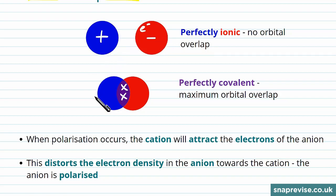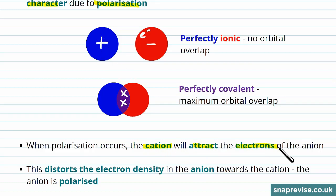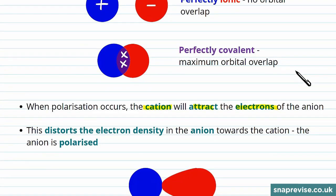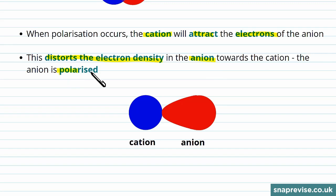In covalent bonding, they're shared. Polarisation is a process that occurs in ionic bonding, where the cation, the positive ion, attracts electrons in the negative ion. This distorts the electron density in the anion, the negative one, towards the positive ion. The anion is said to be polarised.